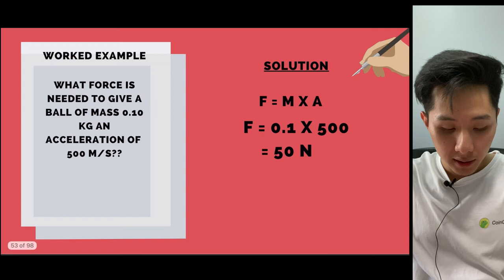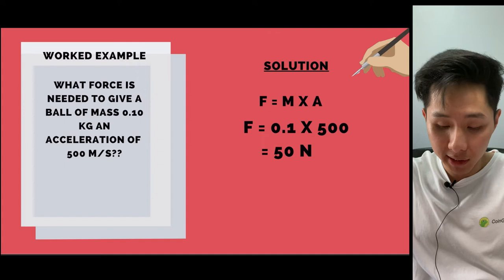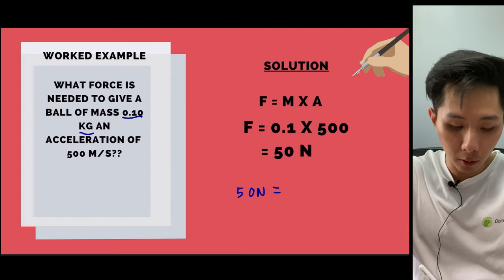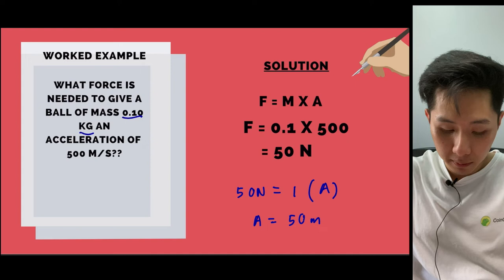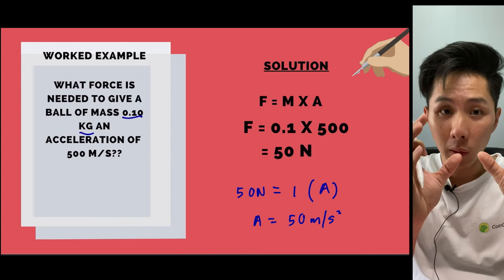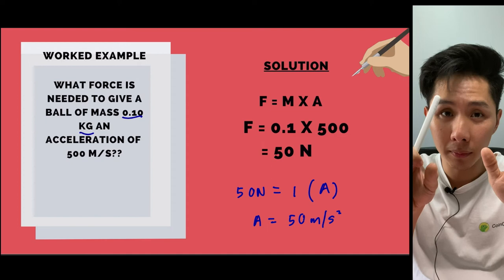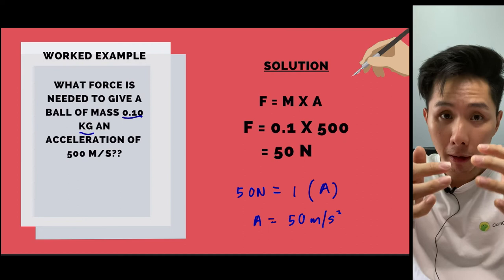Here's intuition for this law: if I apply the same force to a ball of mass 1 kg instead of 0.1 kg, the acceleration is much lower — 50 m/s² instead of 500. This makes sense: given the same force, a lighter object has greater acceleration. That's how these quantities relate to each other.